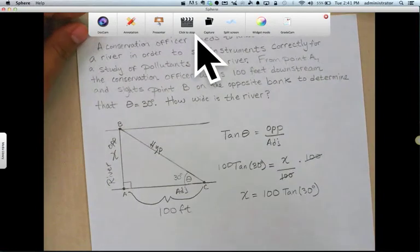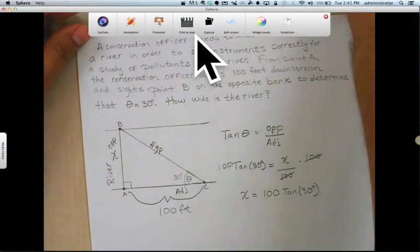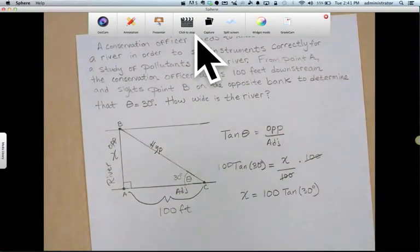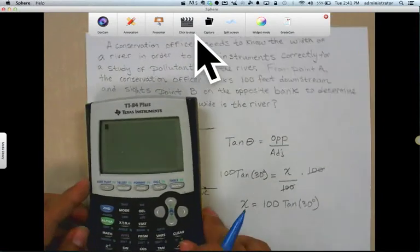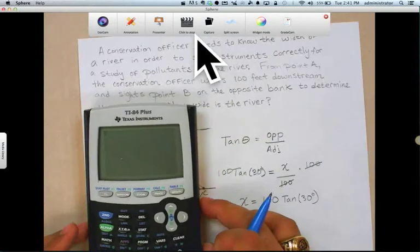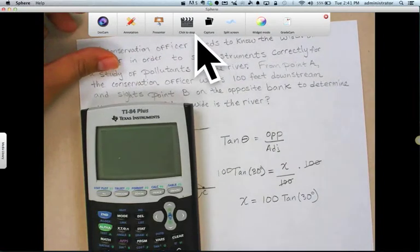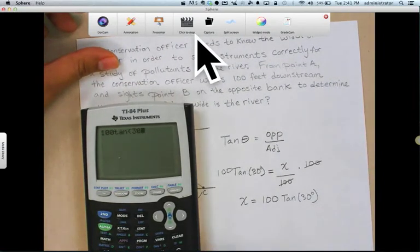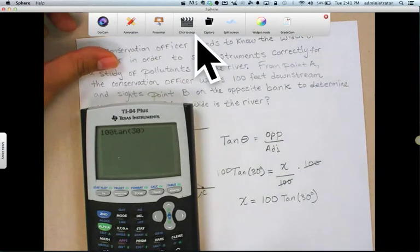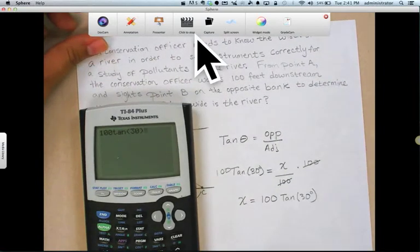Now this calculation is really quite simple. So all we're going to do, we go into our calculator. Now be sure that your calculator is set in degree mode and not gradients for this calculation. So we just type in 100 tangent of 30. Now we're going to round it to the nearest foot.